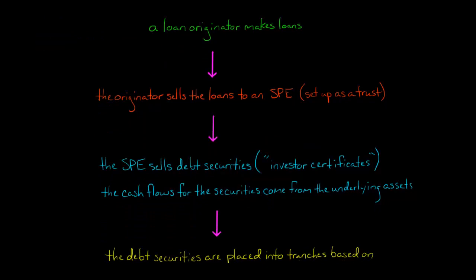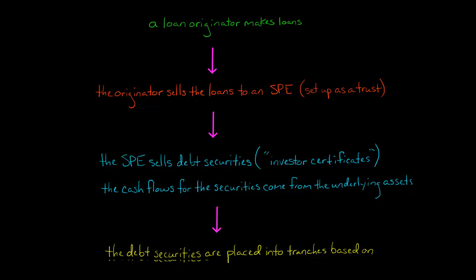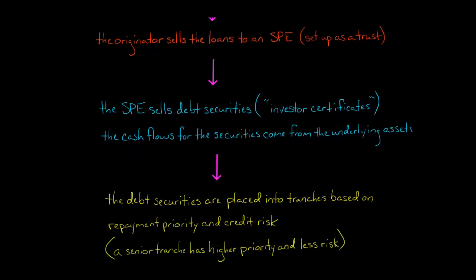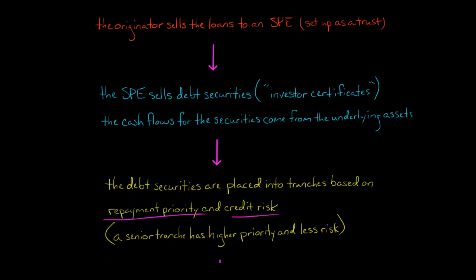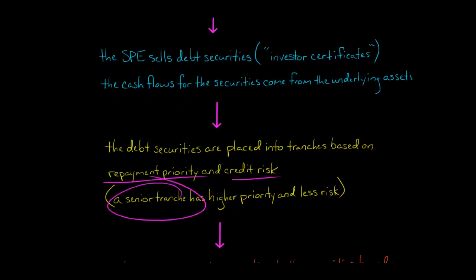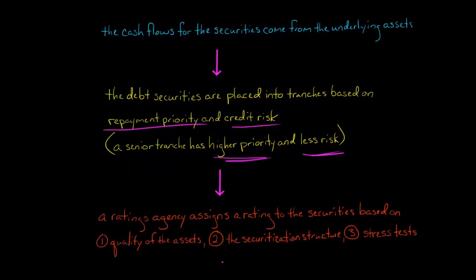The debt securities issued by this SPE are then placed into the tranches we talked about, based on repayment priority and credit risk. If you're in a senior tranche, you're going to have a higher priority and less risk. A ratings agency can then assign a rating to the debt securities — similar to rating bonds or notes — based on the quality of the loans and the securitization structure. They might also do some stress testing.